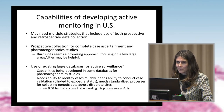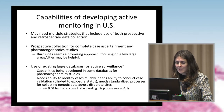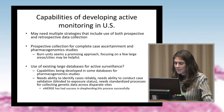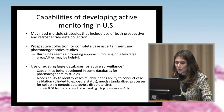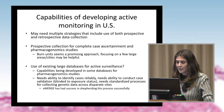Use of existing large databases for active surveillance can be promising because of the large numbers. However, several things need to be accomplished. Some capabilities are being developed in databases for pharmacogenomics studies, but we need the ability to identify cases reliably, the ability to conduct case validation — blinded to exposure status — and standardized processes for collecting genetic data across disparate sites. eMERGE, as we heard yesterday, has had success in shepherding this process.